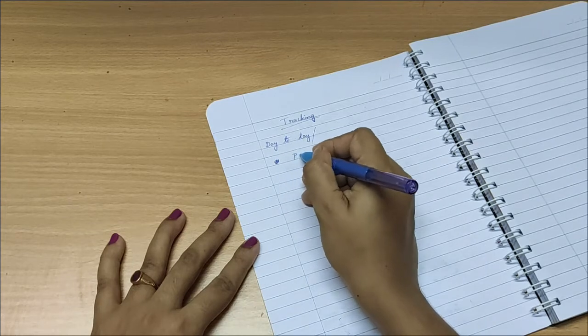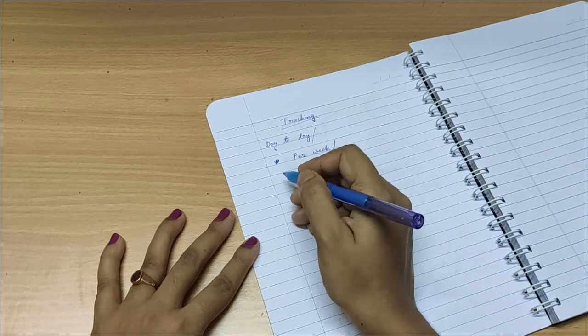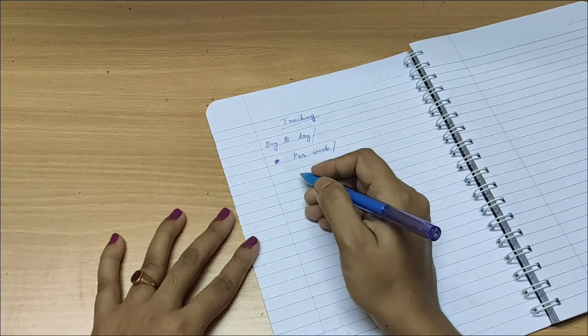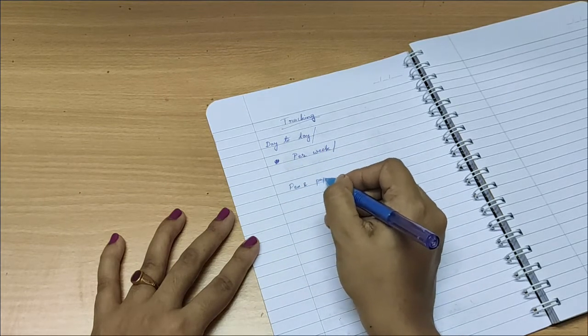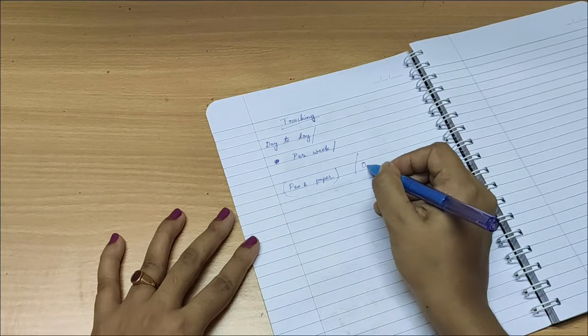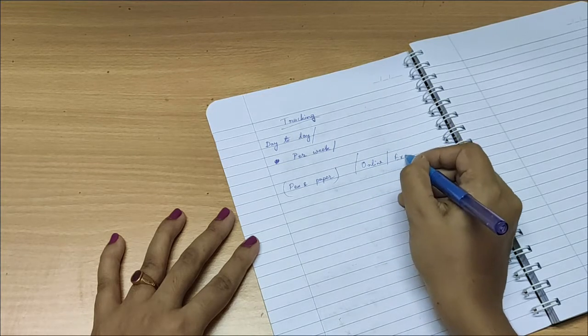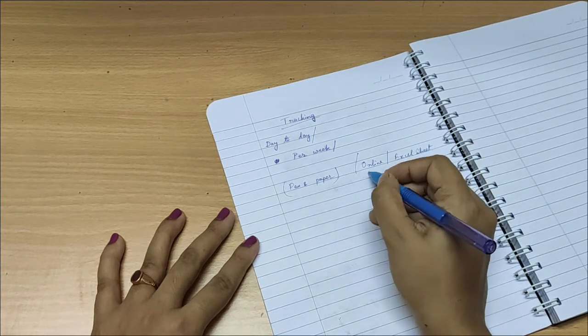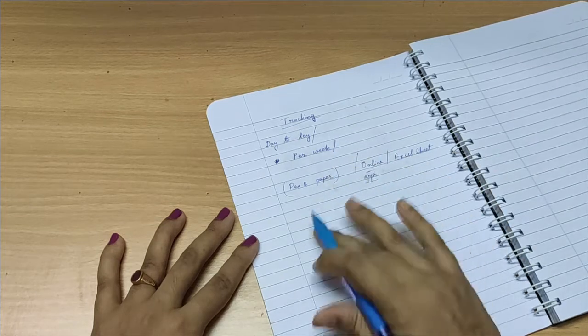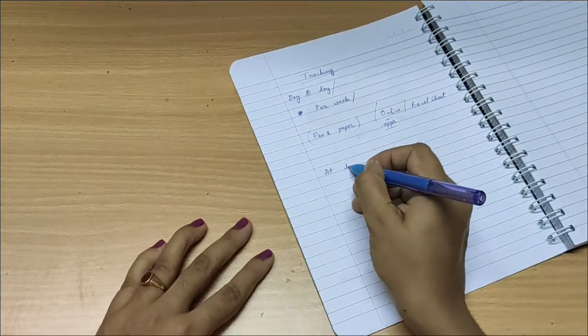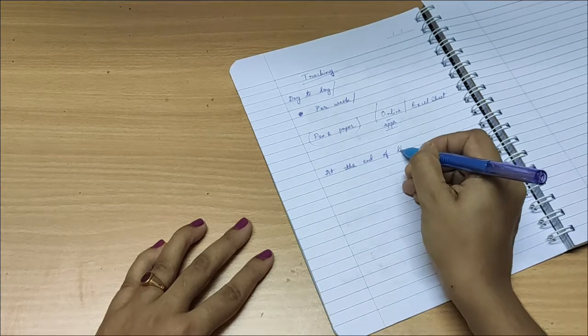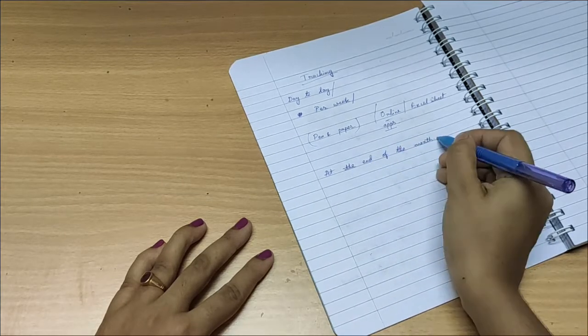And for this you need a strict tracking process of all your expenses and savings. You can do day to day tracking or keep records per week, whichever works for you. You can do it in simple pen and paper method, or use any online apps, or create your own Excel sheet, whatever you feel comfortable.